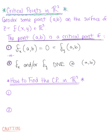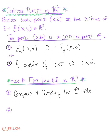These conditions are still the same transitioning from R2 to R3 — we're just adding that extra variable. Now that we have the conditions for a critical point, here is a strategy to help you find the critical points of a multivariable function. Step one: compute and simplify the first order partial derivatives — the partial derivative with respect to x and the partial derivative with respect to y.